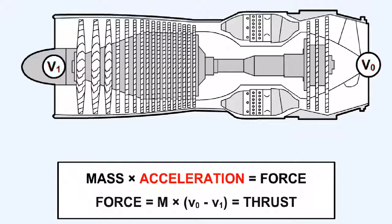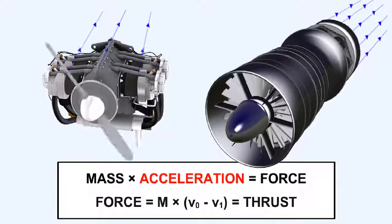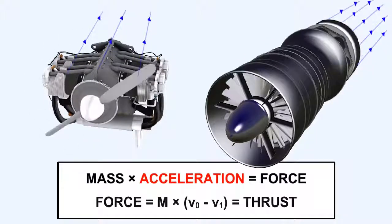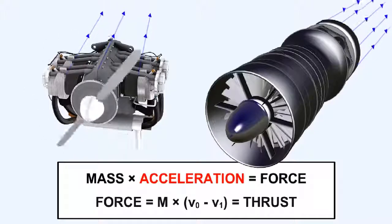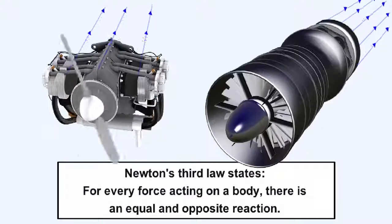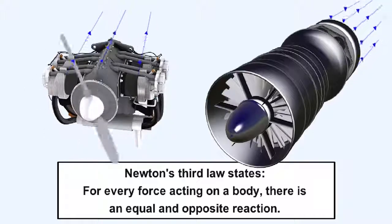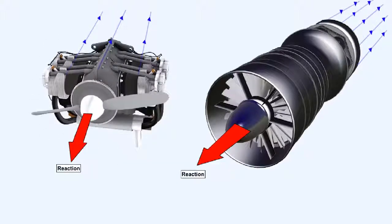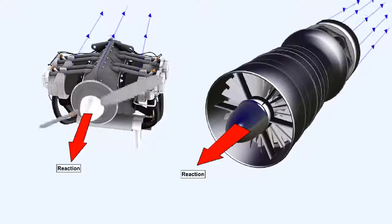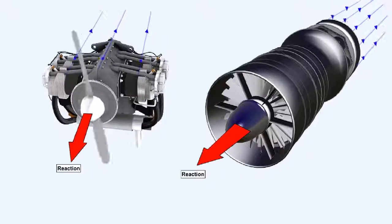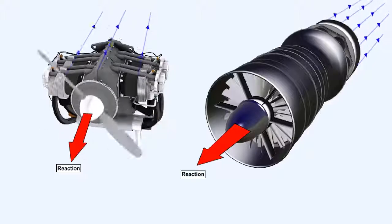Force equals mass times (V0 minus V1), which equals thrust. With the piston engine propeller combination, the propeller drives a relatively large mass of air backwards fairly slowly, while the gas turbine throws a small mass of air backwards relatively quickly. Newton's third law states that for every force acting on a body there is an equal and opposite reaction. In both cases, the force created by the mass of air being thrown backwards and its velocity generates a reaction in the opposite direction, driving the aircraft forwards.